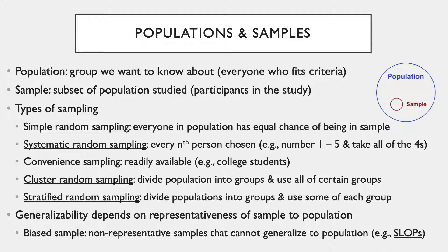Convenience sampling is just like it sounds — samples that are convenient, such as people walking by, college students participating for course credit, or rats used in lab research. Convenient samples are readily available, but that doesn't make them ideal. One problem is that generalizability depends on the variable. For example, college students are probably generalizable to the wider community of young adults for a study on hearing, but if you wanted to study socioeconomic status and happiness, you'd need a wider range of age groups, socioeconomic statuses, and perhaps geographic locations.